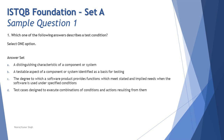With that defined — test condition is something derived from requirements, and test cases are derived from test conditions — let's look at the options. Option A says 'a distinguishing characteristic of a component or system.' This is more about defining a feature or component in the system. When you build a text box you call it a specific component, and test condition has nothing to do with that. This is more on the functionality or feature side.